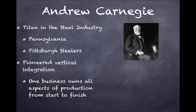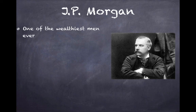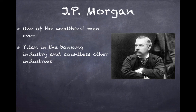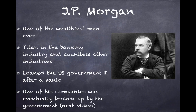Andrew Carnegie later sold his business — known as U.S. Steel — to J.P. Morgan. Morgan became one of the wealthiest men ever, not only in the United States but comparable to wealthy people around the world. He was a titan of the banking industry and countless other industries, using his power within finance to expand control into many different sectors. He even loaned the U.S. government money after a major panic, helping to stabilize the American economy. One of his companies was eventually broken up by the government — we'll talk more about trust busting in the next video.